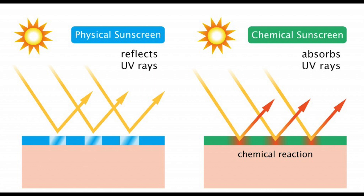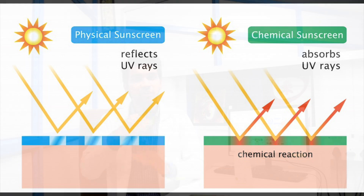दूसरा है chemical broad spectrum sunscreen। इसमें carbon based particles होते हैं जो sun rays को पहले absorb करते हैं और फिर उसे heat के form में नष्ट कर देते हैं। यह UV-B sun rays से बचाता है। तो ideal sunscreen वो है जो physical भी हो और broad spectrum भी हो, और जो smooth और transparent हो जिसे हम apply करके बाहर जा सकें। Market में ऐसे sunscreens already available हैं जिनमें UV-A और UV-B दोनों protectors हों।